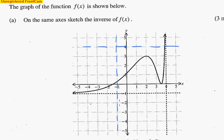And now let's just change some points over. So this point here is the point (2, 3). So the point on the inverse will be the point (3, 2), which is here.